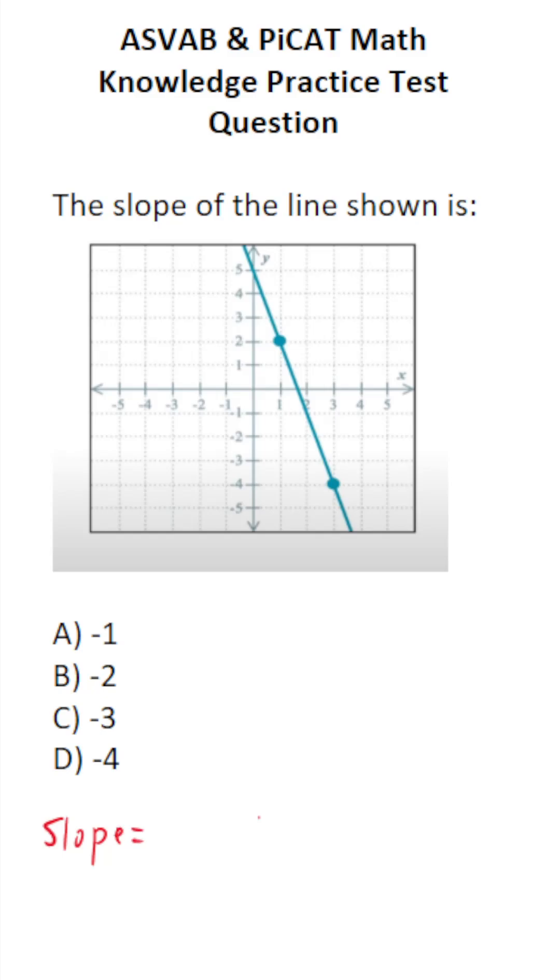Algebraically, we say slope is represented with the letter variable m. It's rise over run.